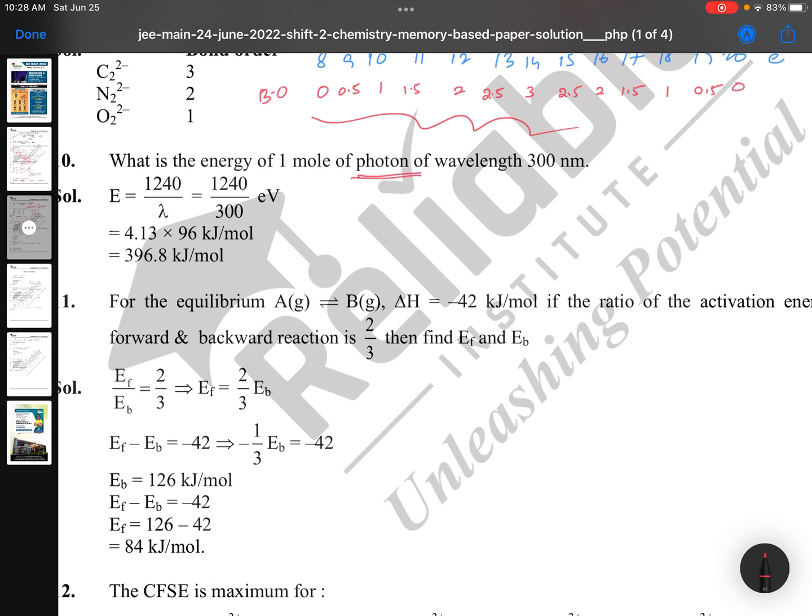What is the energy of one mole of photons of wavelength 300 nanometers? Yesterday only I asked this question in my class. Very simple question. E equals h nu or h c by lambda, this is for one photon. For one mole, multiply with Avogadro's number. Otherwise the shortcut formula is E equals 1240 by lambda. Simple question from atomic structure, again easy.